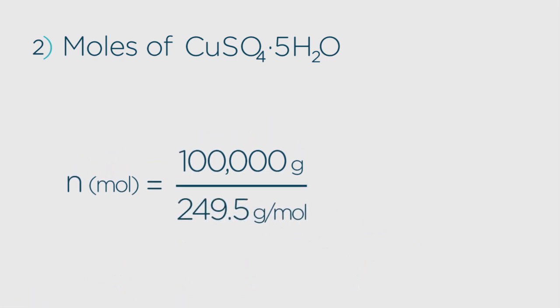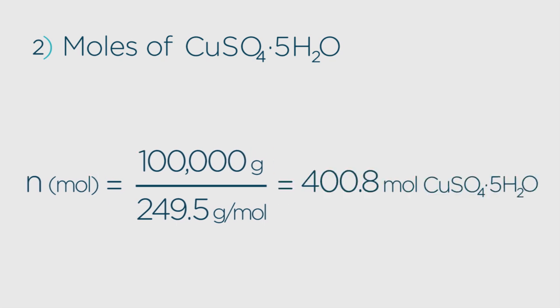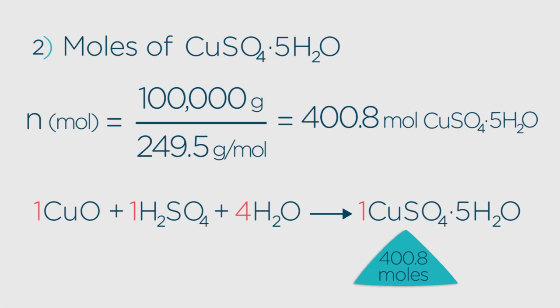100,000 divided by 249.5 equals 400.8 moles. So this is the number of moles of copper oxide we need to add to the acid.